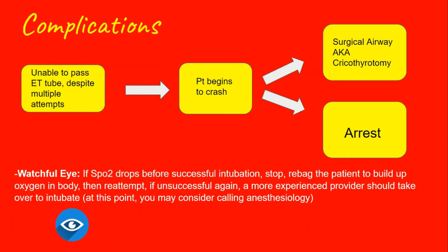Most importantly, you need to keep a watchful eye. Keep a close eye on the SpO2 and communicate with the team if it's dropping so the patient can be re-bagged in order to build oxygen back up before another attempt is made. The providers will be attempting the intubation with the laryngoscope inside the patient, but if the oxygen begins to drop, you let the team know by saying: 'SpO2 is now 90%, 88%.' The team will then stop, take the laryngoscope out, and bag the patient again with the bag valve mask until oxygen levels build up, then retry.